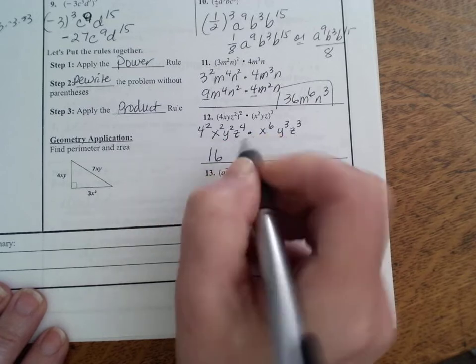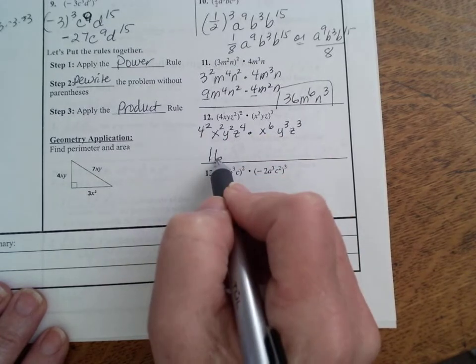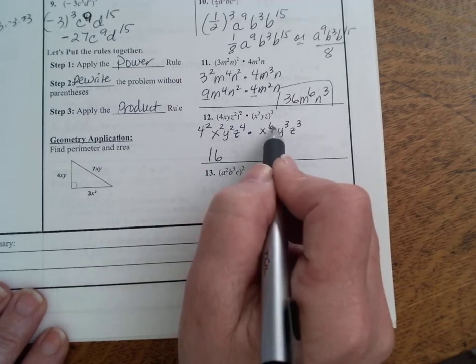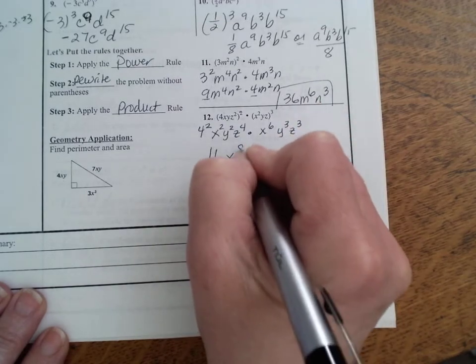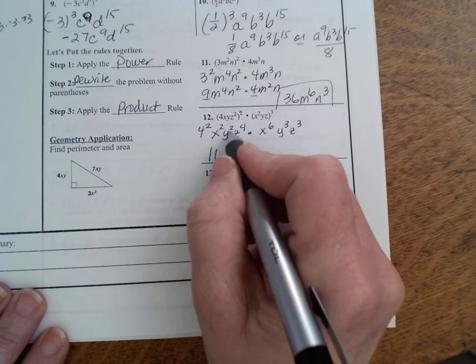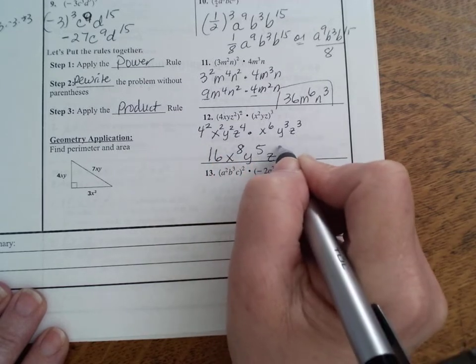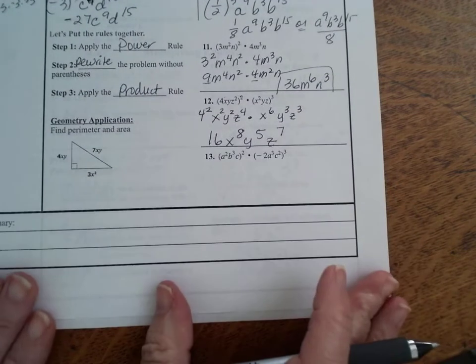Now what you could do on this one, I can go ahead and simplify that, 4 squared is 16. Now I could go ahead and combine these if I want. x squared times x to the sixth, add x to the eighth, y to the fifth, and z to the seventh.